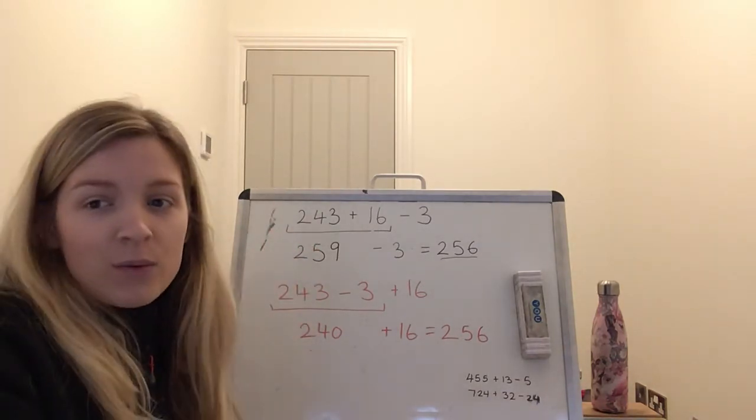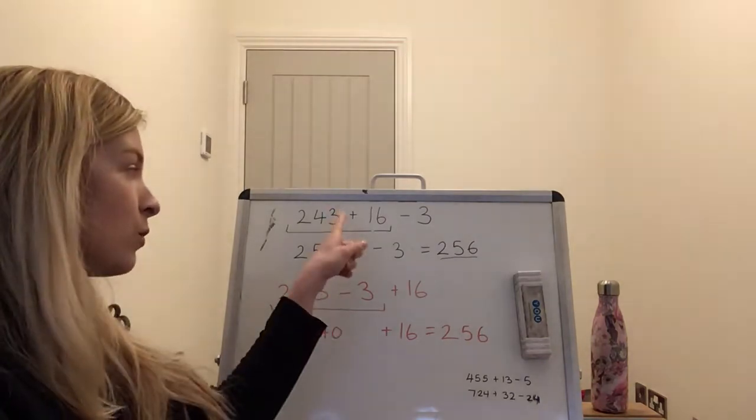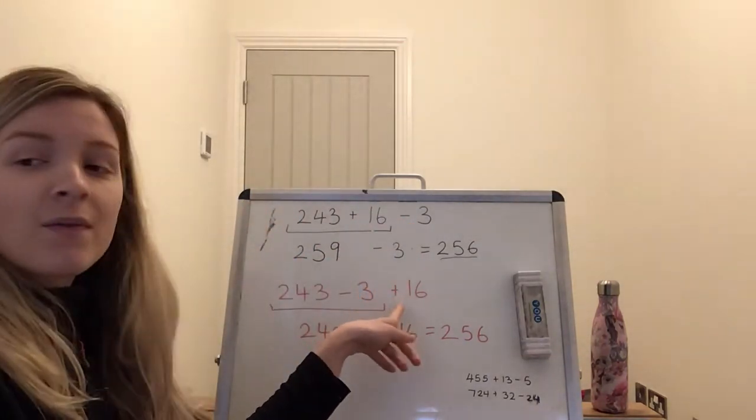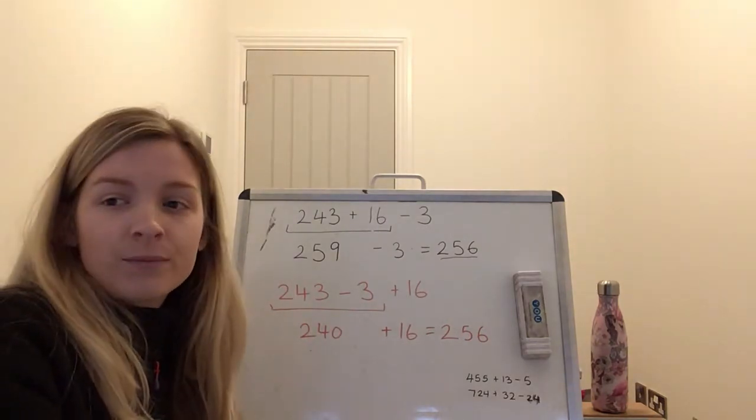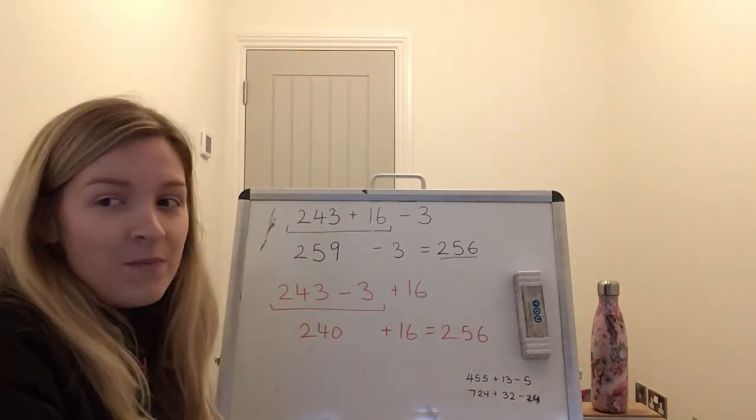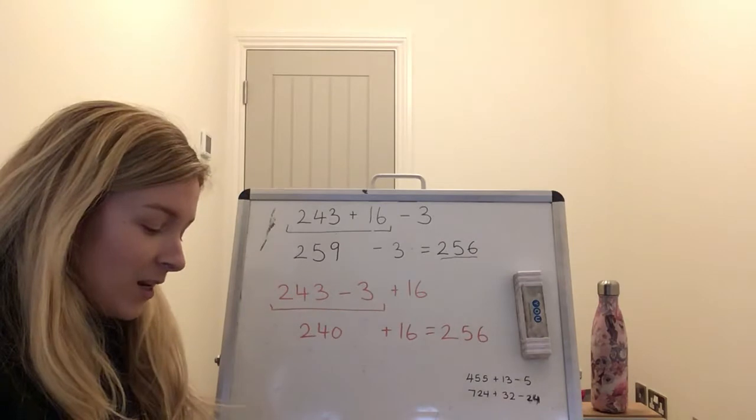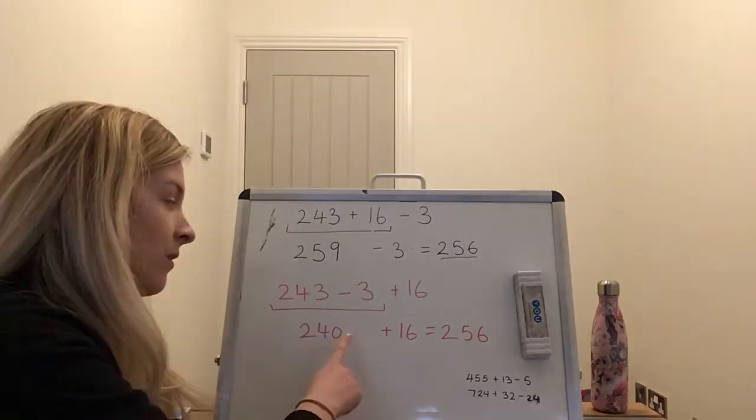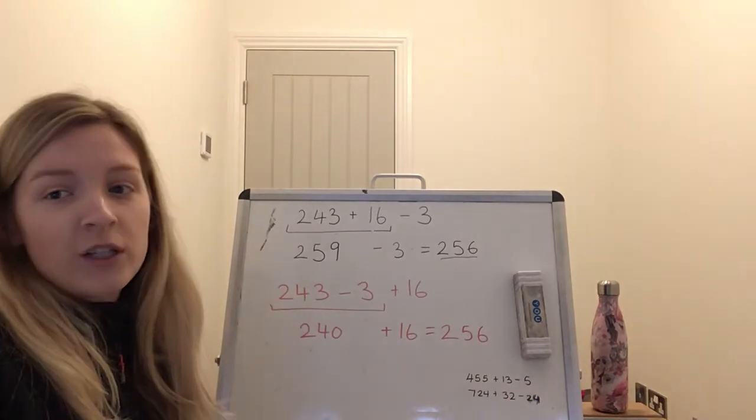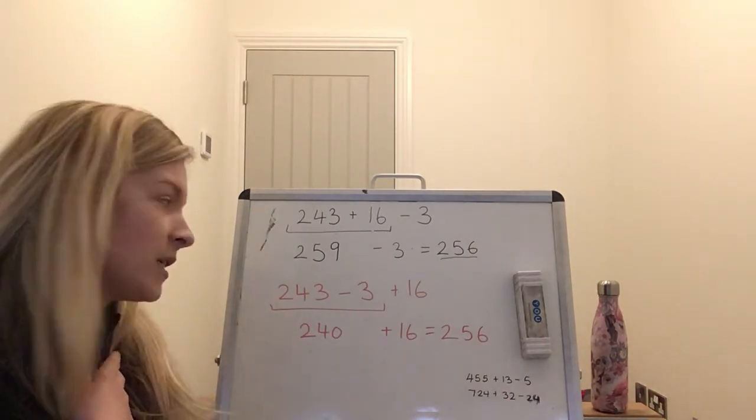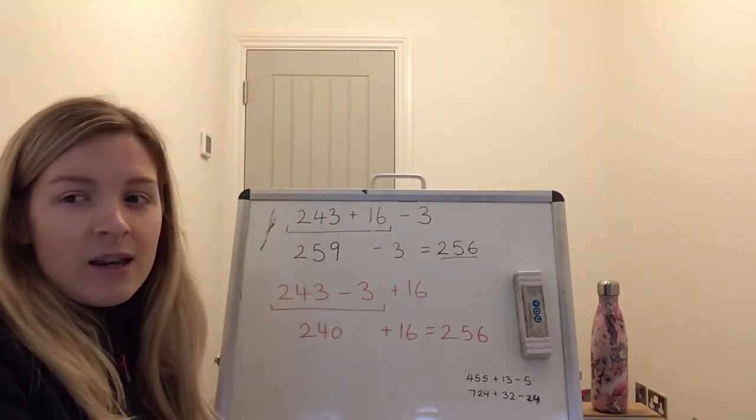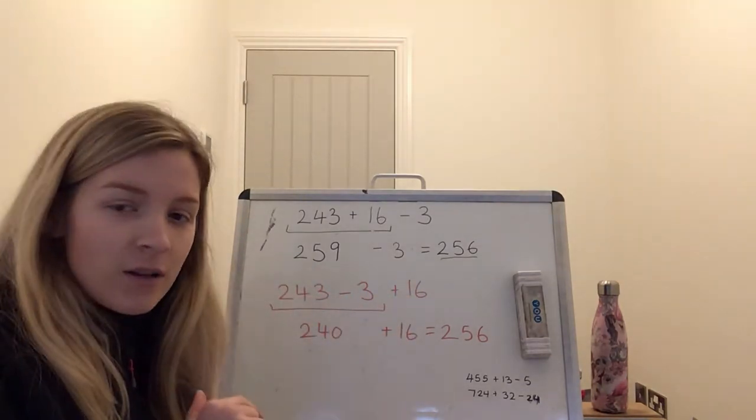So what do you think was easier? Do you think it was easier to do plus 16, take away 3? Or take away 3 and then add 16? What do you think? Hmm, interesting to see which is the more efficient way. I think this way was far more efficient. I found it much easier to take away the 3 straight away and then add the 16.